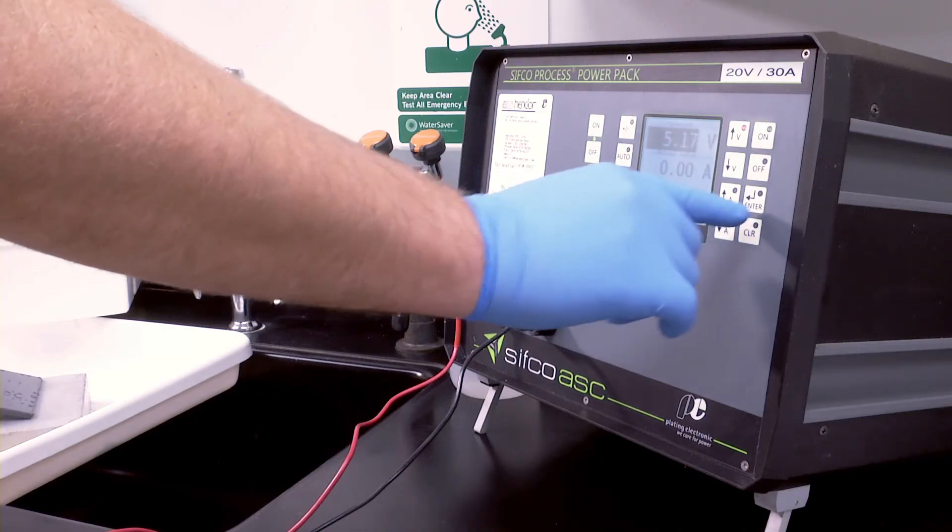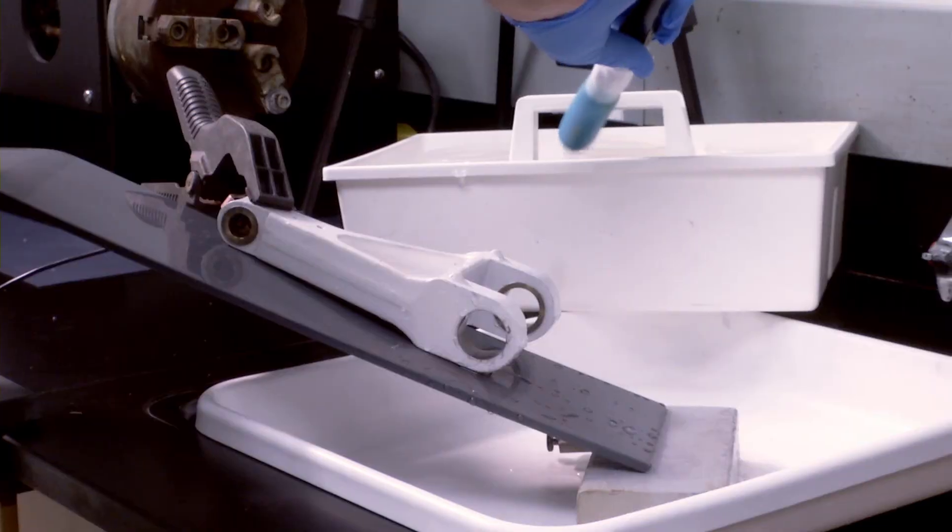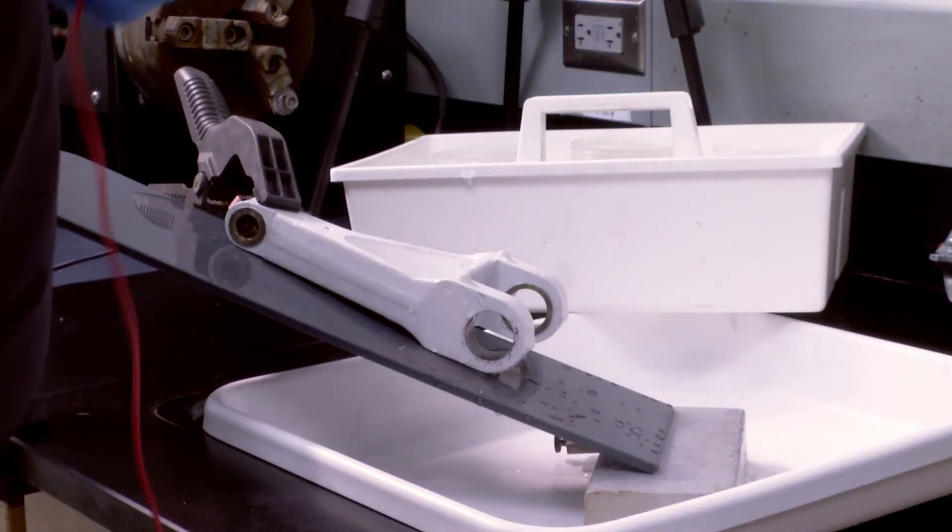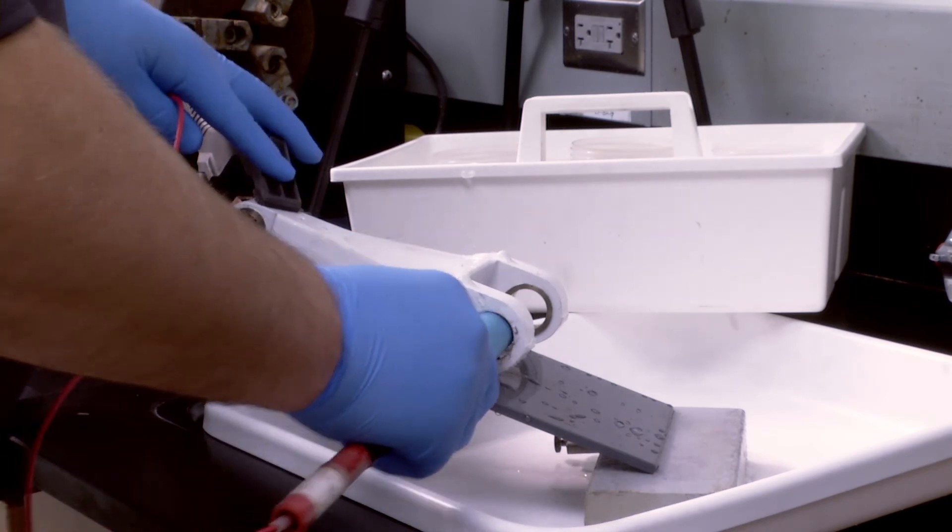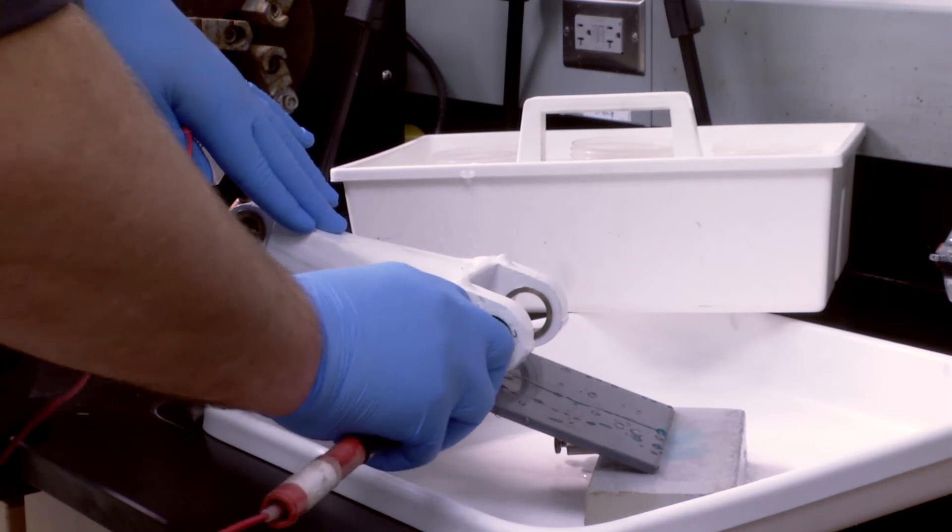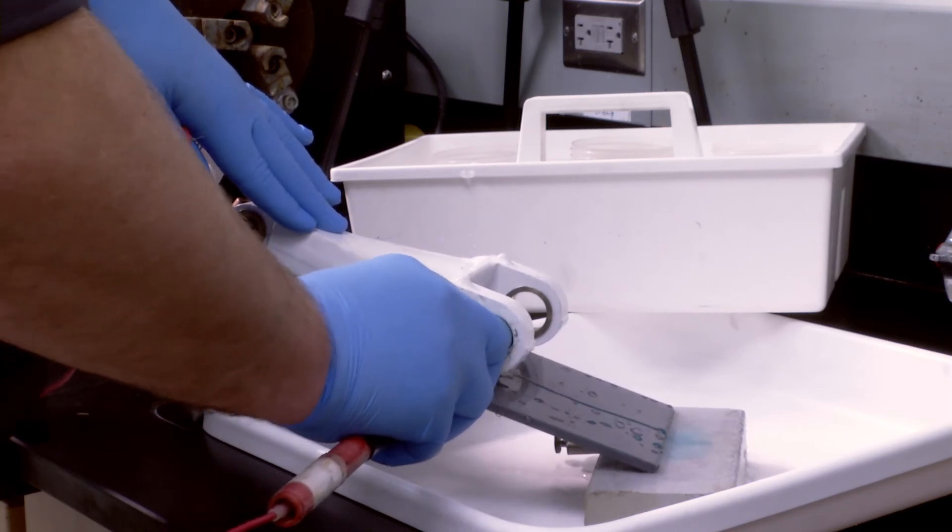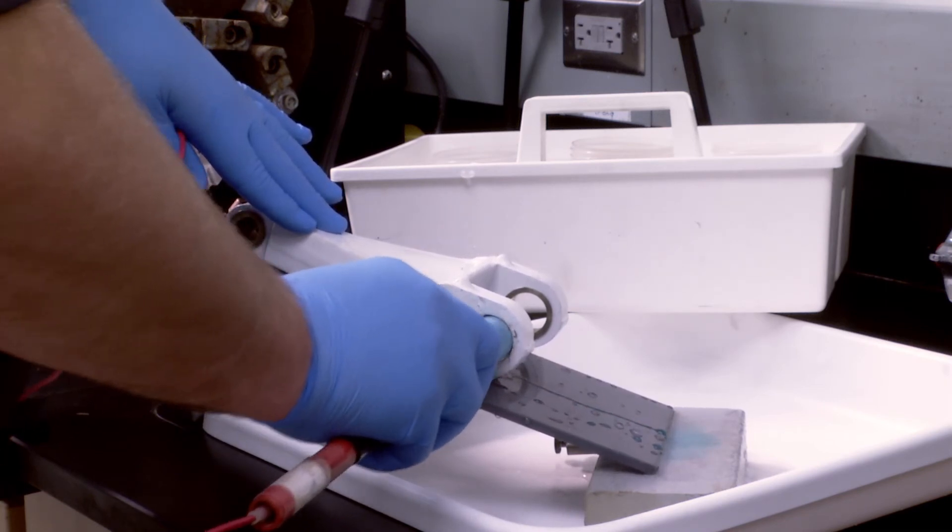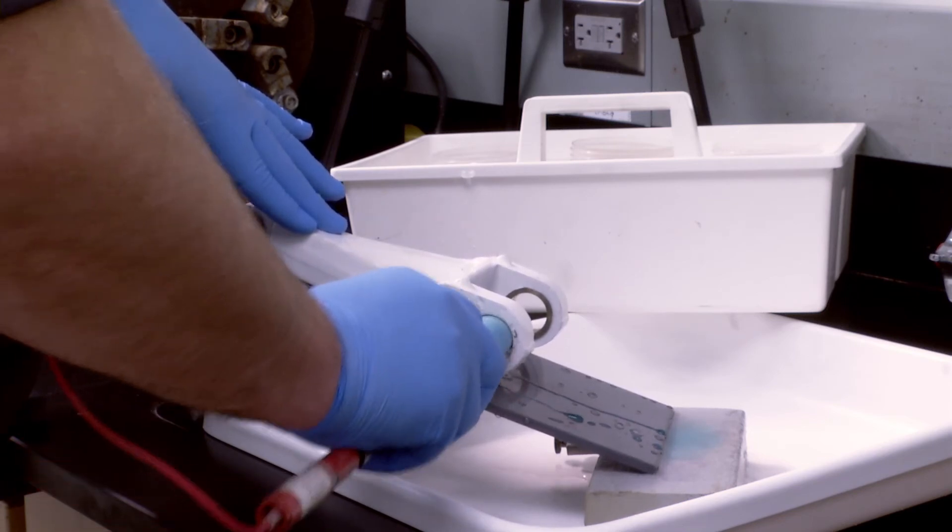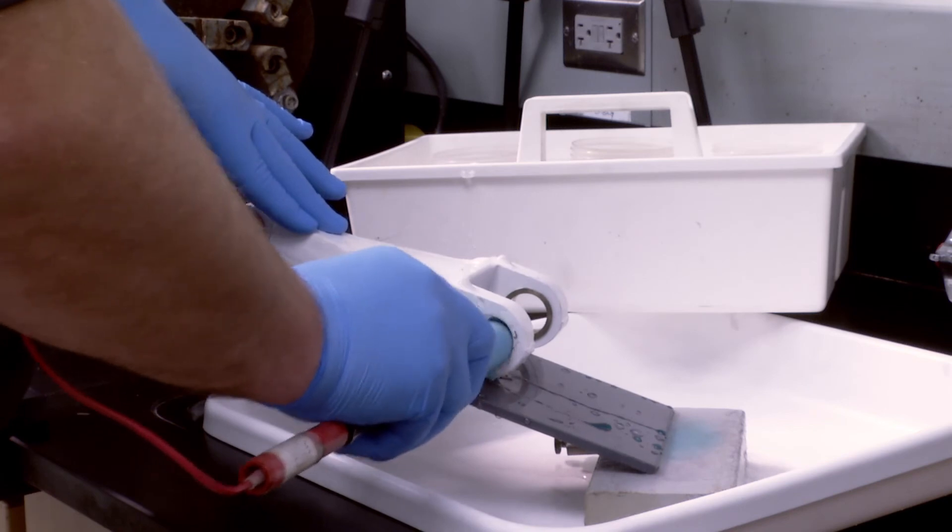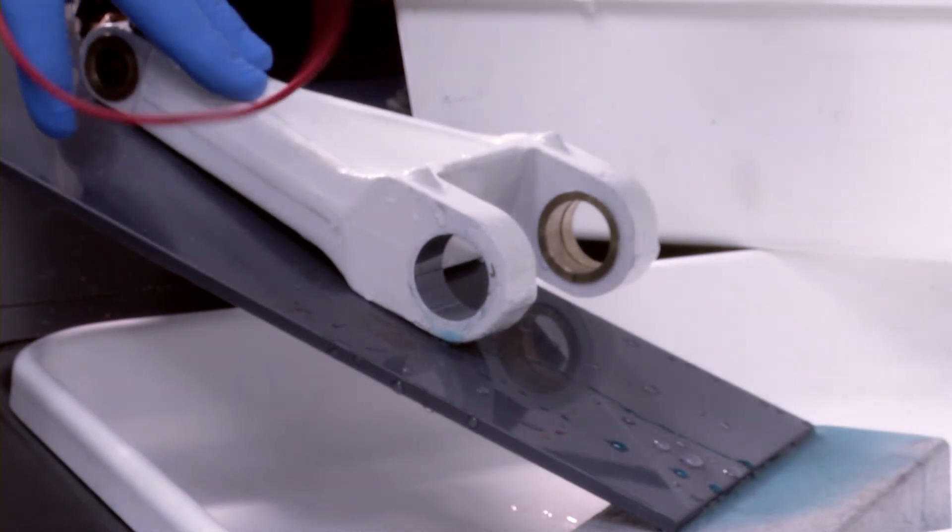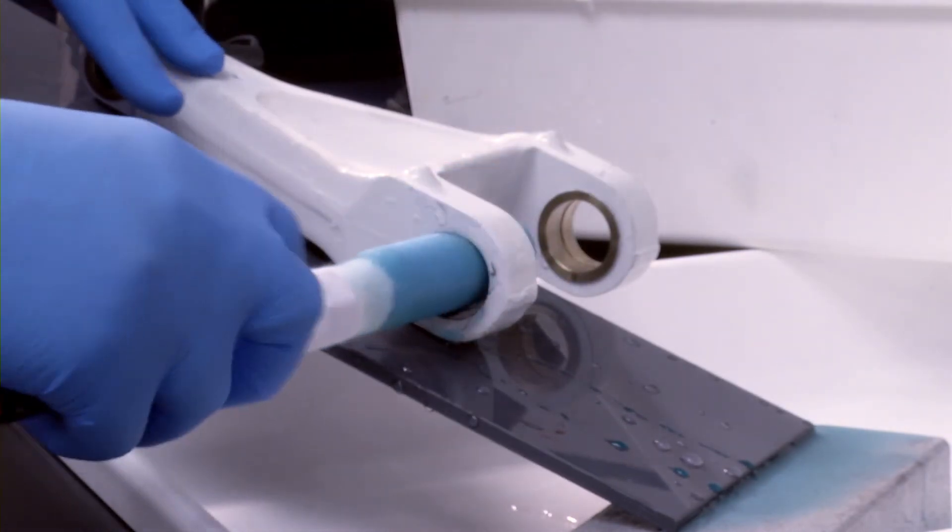The conforming anode is wrapped with cotton batting and sleeving. It is thoroughly saturated and the initial contact with the part is made with current. The anode is moved around the circumference of the part to ensure a uniform deposit thickness. It's re-saturated every 10 to 15 seconds. The process is repeated until the calculated amp hours have been passed to apply a minimum of five ten thousandths of an inch thickness. Using an anode with optimum contact area, the plating time to apply this thickness is around three minutes.